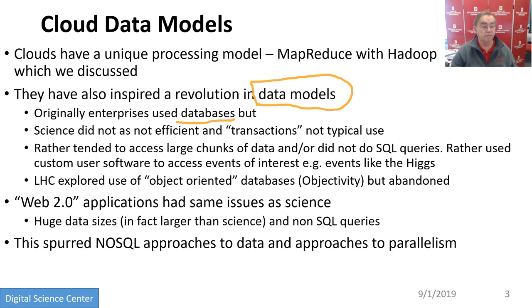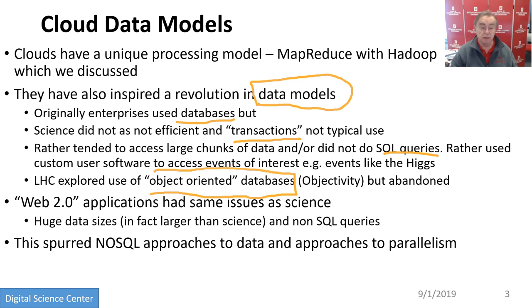Science did not use databases — it didn't really need them. It did not have transactions; it had large chunks of data like images. It didn't really want SQL queries; SQL wasn't optimized for science. They used custom software to access information of interest, such as trying to access events which the Higgs boson produced. There was a serious exploration of object-oriented databases by the particle physics community — they used Objectivity among others — but that failed. They did not find it useful compared to the traditional approach of lots and lots of files.